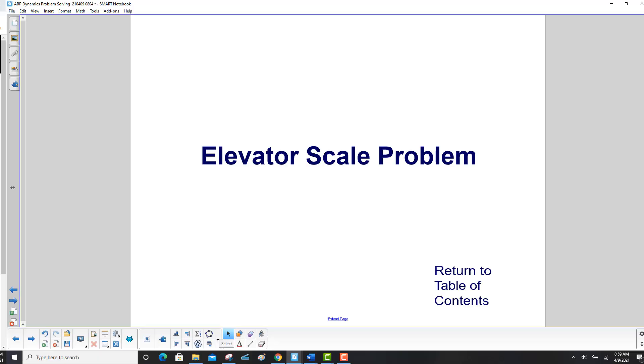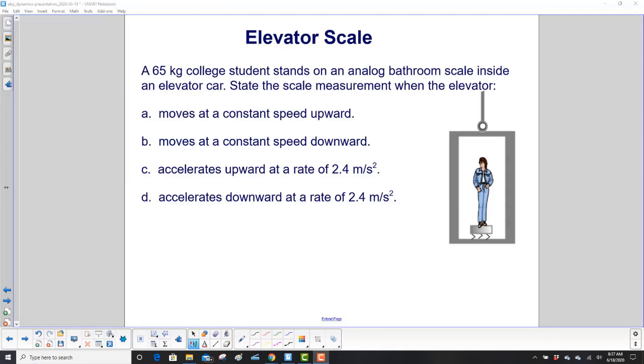Elevator Scale Problem: A 65-kilogram college student from the 1970s stands on an analog bathroom scale, also from the 1970s, inside an elevator car. State the scale measurement when the elevator moves at a constant speed upward, same thing but in the downward direction, or accelerates upward at a rate of 2.4 meters per second squared, or the same rate in the downward direction.